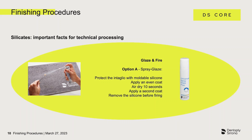Glaze sprays must be shaken very thoroughly for at least one minute before use. Then spray the glaze spray onto the surface of the restoration from a distance of about 10 cm with short bursts. It is essential to ensure that the glaze layer does not become too thick. In practice, apply one layer of glaze spray per surface, wait a short time for the solvent to evaporate, and then apply a second layer from a distance of 10 cm. What remains is a slightly frosty looking surface with an even glaze application.